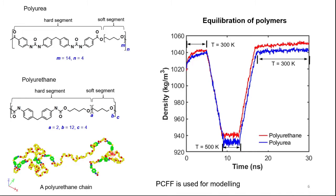This is the equilibration procedure for the two polymers, which shows the variation of density with time up to 30 nanoseconds. Initially, we kept the sample at 300 Kelvin, then increased the temperature up to 500 Kelvin, and then brought it back to 300 Kelvin. These are the final densities of the samples. For the simulations, we used the PCFF potential.